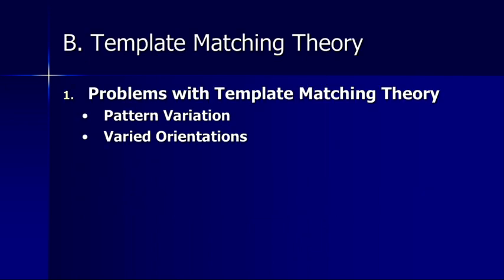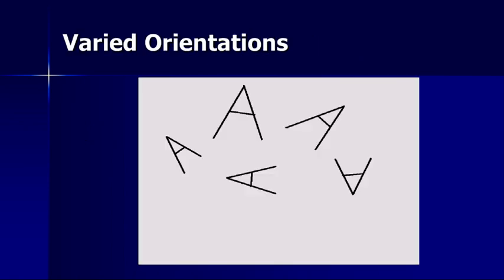The other problem with template matching theory is we're able to identify objects that are not in their normal orientation — that is, they're tilted to one degree or another. Early research in template matching theory tried to account for this by saying you would have to mentally rotate the letter or object so that it matched the template, which is why it took longer to identify letters in alternative orientations. The other alternative is that you would have to have a template for each of these additional orientations — again, not a very parsimonious explanation.